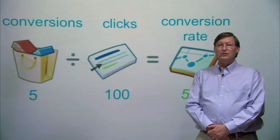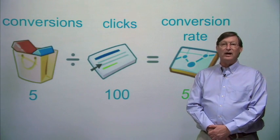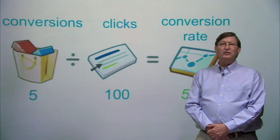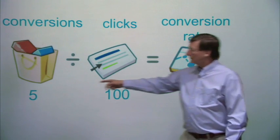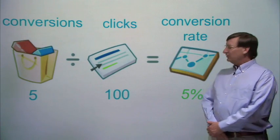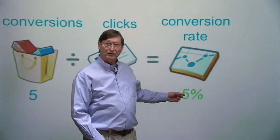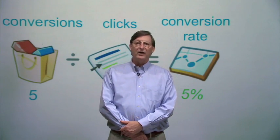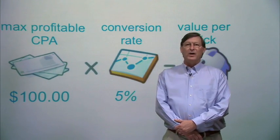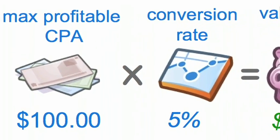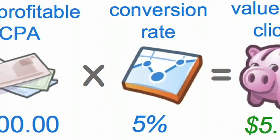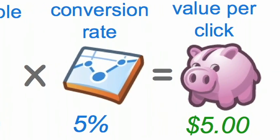You can use AdWords conversion tracking or a website analytics tool like Google Analytics to get this data. So let's say that for every 100 people that click on your ad, you get 5 conversions — that's a conversion rate of 5%. The next step is to calculate your value per click by multiplying your value per conversion times your average conversion rate. So $100 times 5% gives you a $5 value per click.